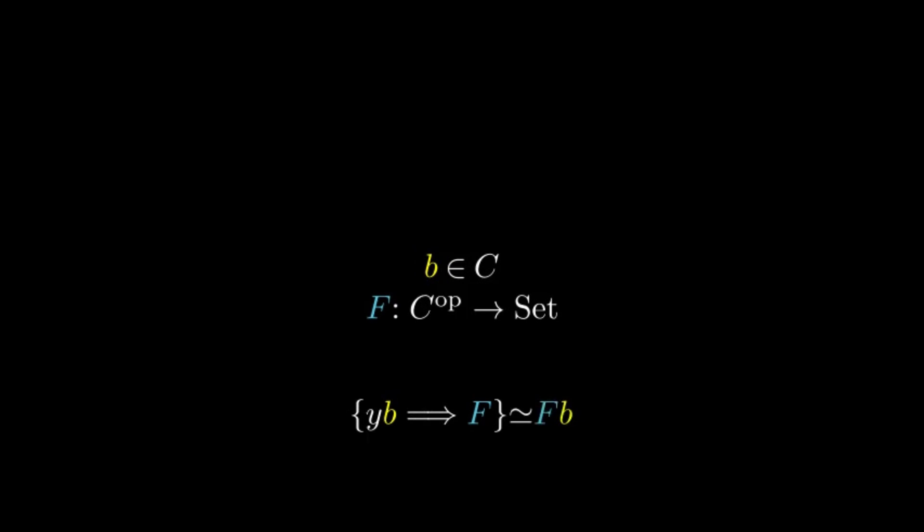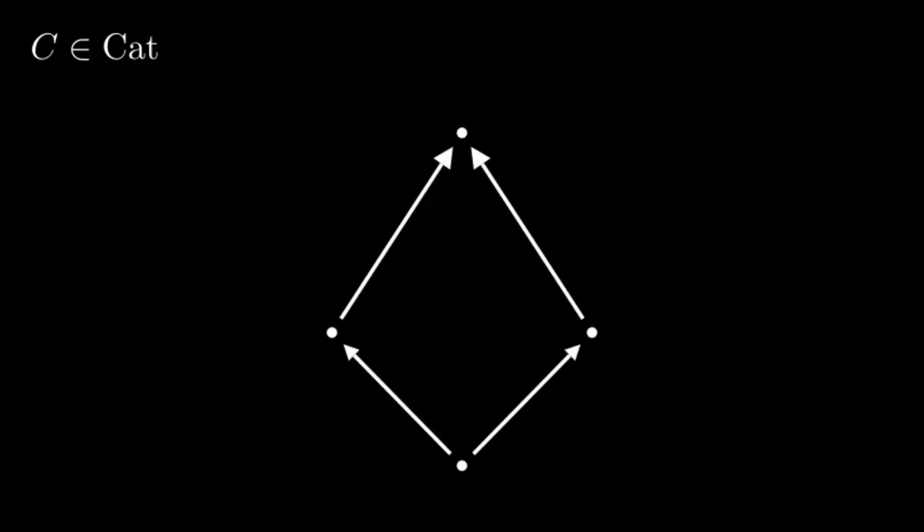What does all of this mean? Imagine having a category. You can picture it as a graph, keeping in mind things like identity morphisms and composition laws.